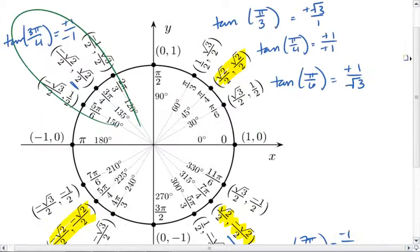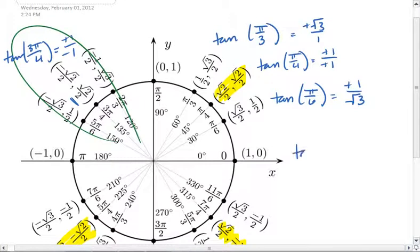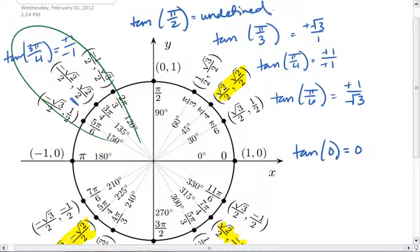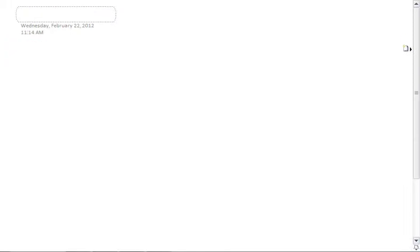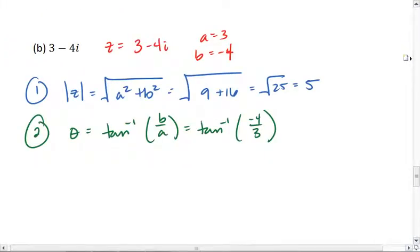I look at my unit circle. The only tan inverse values I can solve from the unit circle are 1 over root 3, 1, root 3, and 0. So for something like tan inverse of negative 4 over 3, you're going to have to calculate it with your calculator. Let's put this one in degrees — taking tan inverse of negative 4 over 3, I get the argument of negative 53.13 degrees.